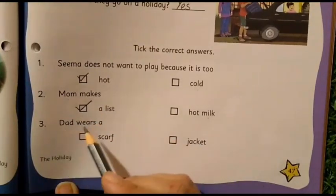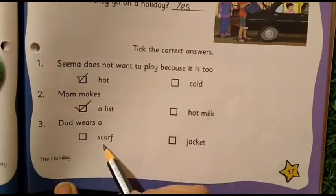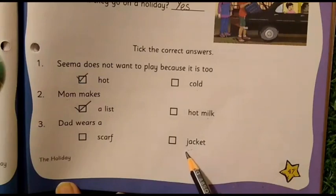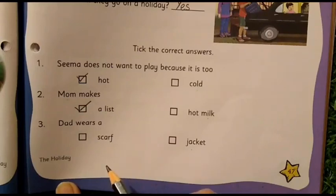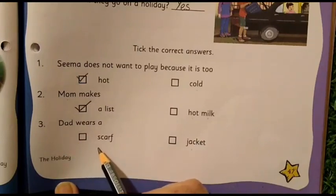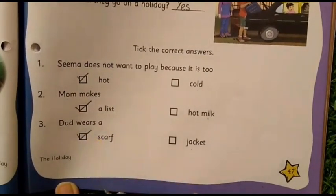Now come to number 3: Dad wears a... First option: scarf. Second option: jacket. Who wore a jacket on the way? Dad? No, it was mom. So who wore a scarf? The blue colored scarf — it was dad, isn't it? So which one will be the right answer — scarf or jacket? You have to put a tick mark on scarf because that is the right answer.